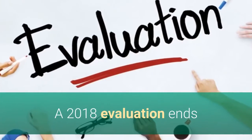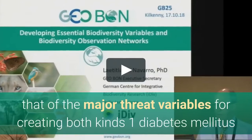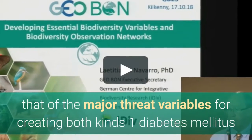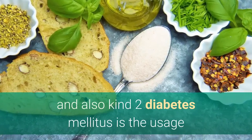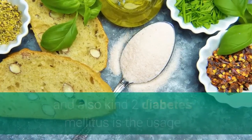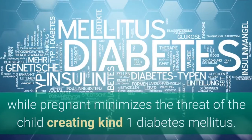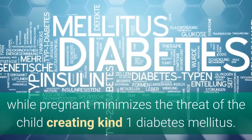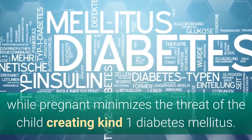A 2018 review concludes that one of the major risk factors for developing both type 1 diabetes mellitus and type 2 diabetes mellitus is the usage of gluten, and that a gluten-free diet during pregnancy reduces the risk of the child developing type 1 diabetes mellitus.